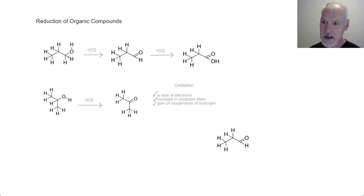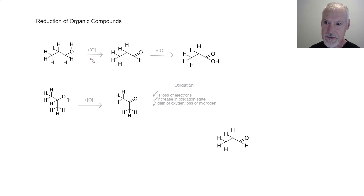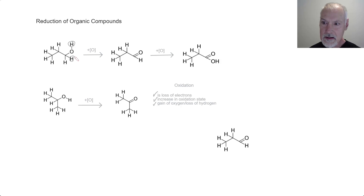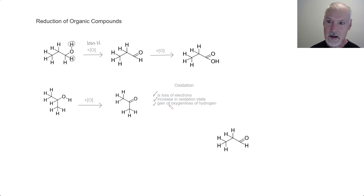Beginning with this compound — and we can recall this from earlier — this is a primary alcohol. We oxidize that into an aldehyde. Let's look at what's happened to identify this as oxidation. To move from one species to the other, I can see that these hydrogens were removed. So here we have a loss of hydrogen, which constitutes oxidation.